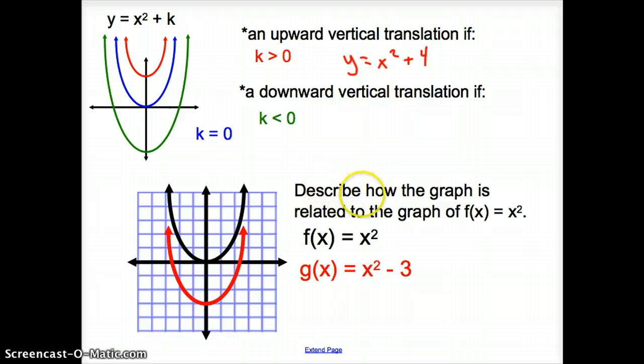So what do these problems look like? We will be asked to describe how the graph is related to the graph of f(x) equals x squared. So we're going to be describing how this red equation is related to the graph of this black parabola.